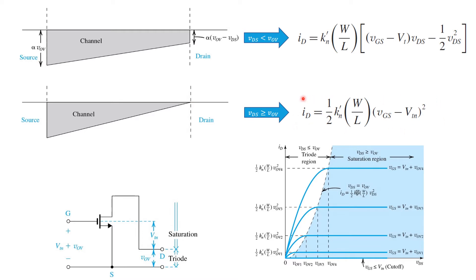We've also assumed until now that for larger drain source voltages, the drain current remains constant at this level. So a plot of ID versus VDS becomes perfectly flat once we enter saturation, with absolutely no dependence on the drain source voltage. This, as we'll see, is an idealization.